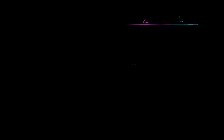What I want to explore in this video is: given some length of string or line segment b, can I set up an a so that the ratio of a to b is equal to the ratio of the sum of these two to the longer side? So it's equal to the ratio of a plus b to a.